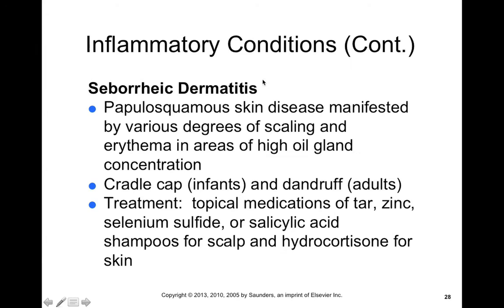Seborrheic dermatitis is a papulosquamous skin disease manifested by varying degrees of scaling and erythema, typically in areas of high oil gland concentration. In adults, we call it dandruff — it's found a lot in the scalp, hence the name. However, dandruff can occur elsewhere too, wherever there's high concentrations of oil glands. In infants, we call it cradle cap — essentially inflammation of that area of skin where we find a lot of sebaceous glands. It's treated topically with things like tar and zinc, selenium sulfide, or salicylic acid shampoos for the scalp-associated form.